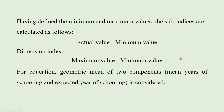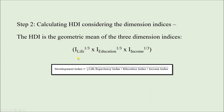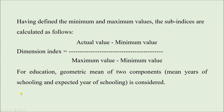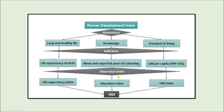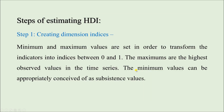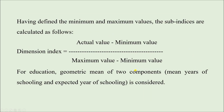After calculating the three dimension indices, we use a formula where we multiply all three values and then take the cube root — that gives us the HDI value. For the education dimension specifically, since there are two indicators (mean years of schooling and expected years of schooling), we first take the geometric mean of those two — meaning we multiply the two scores and take the square root — before proceeding.